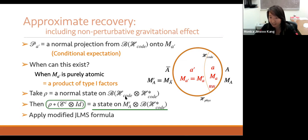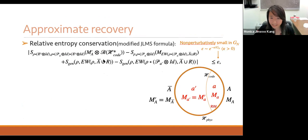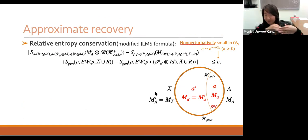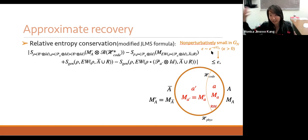Taking the state rho as a normal state on the augmented system — including the new reference system — we apply the relative entropy conservation with a gravitational dissipation term: the modified JLMS formula. This gives a generalized entropy term from the bulk and boundary, which is normally zero at order 1/G_N. With non-perturbative gravitational corrections, there is now an epsilon that is non-perturbatively small in G_N, explicitly written as exponential to minus G_N with a positive coefficient.